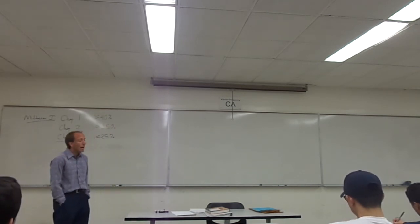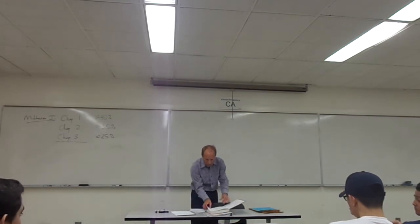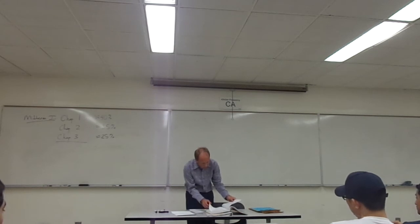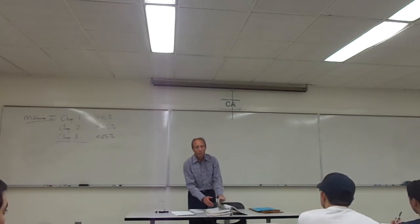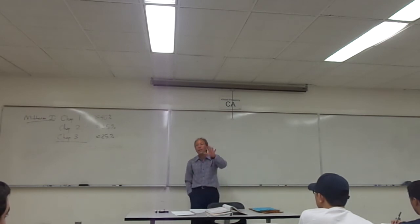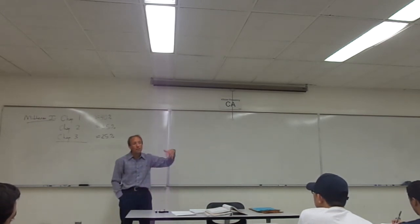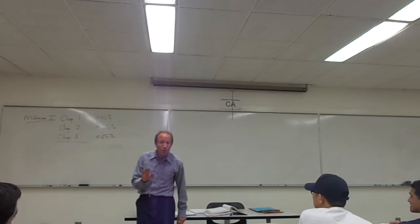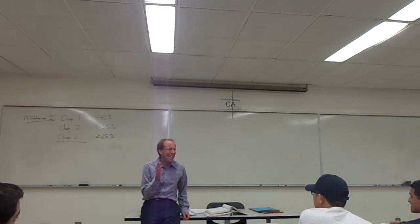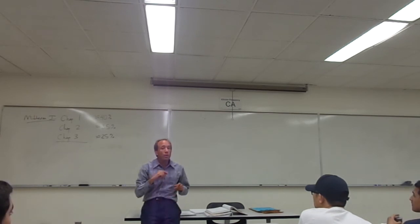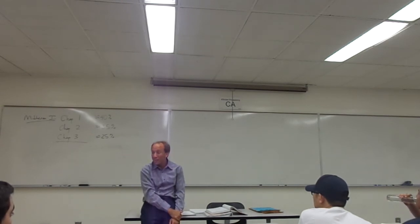That pretty much wraps up chapter three. There is a bit in chapter three about permutations in section 3.1 — you don't need to know those details. Section 3.1 also discusses the area and volume interpretation we covered last week, and that's a good thing to be familiar with.